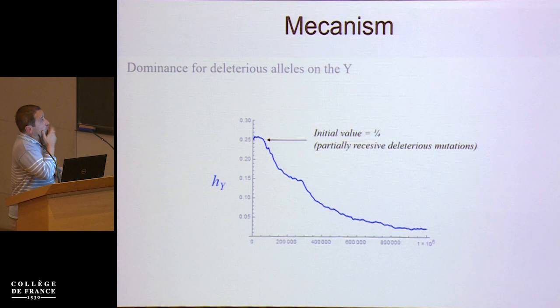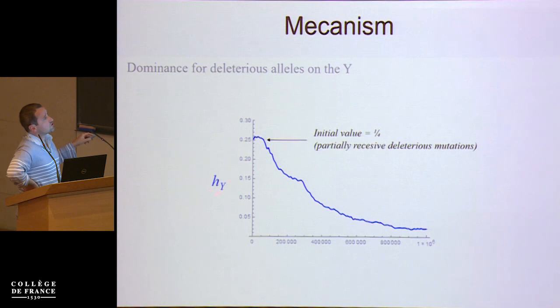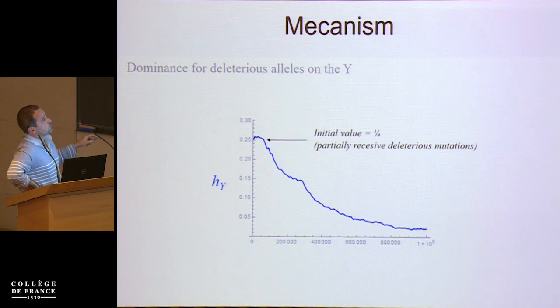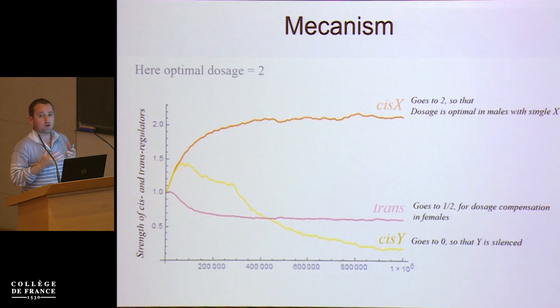So what is the mechanism behind this? A good starting point is to look at the dominance from the point of view of a Y chromosome — what would be the dominance of a deleterious mutation on the Y? The initial value would be one quarter, as set in the simulation. What you observe is that a deleterious mutation on the Y becomes recessive over time, and that is the reason they accumulate.